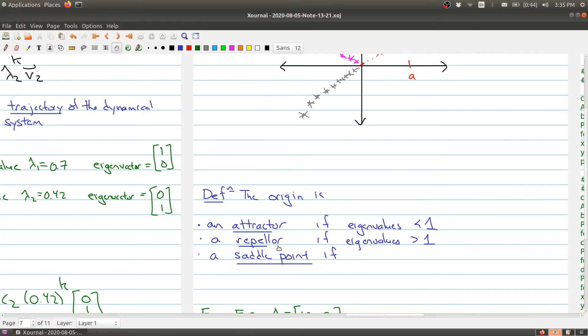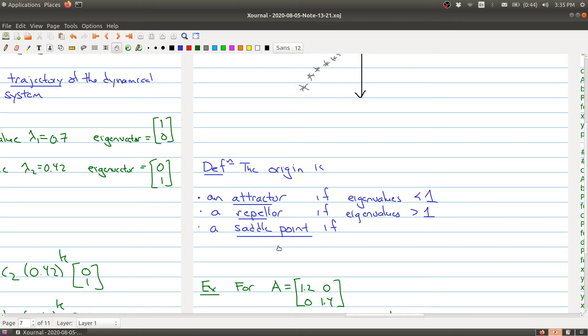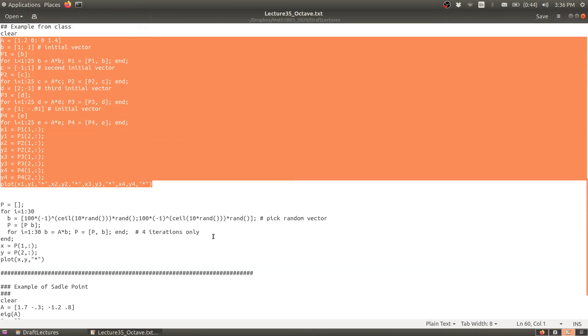And then we have a saddle point if you kind of have both things happening, right? So if one eigenvalue is greater than 1 and the other is less than 1.